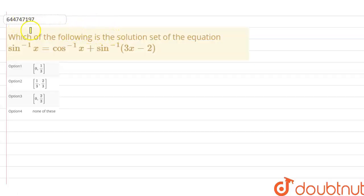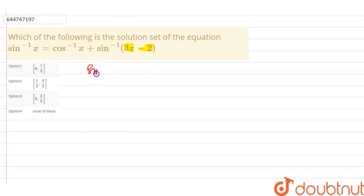Which of the following is the solution set of the equation: sine inverse x is equal to cosine inverse x plus sine inverse of 3x minus 2? So we are given that sin⁻¹x = cos⁻¹x + sin⁻¹(3x - 2).